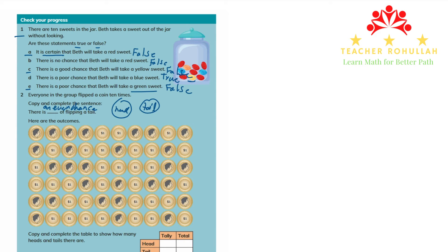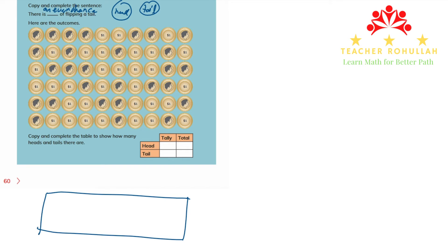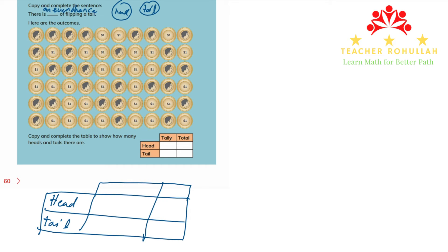As I said, the students flip the coin 10 times each. At the bottom it says copy and complete the table to show how many heads and tails there are. I will draw a bigger table here because the table is very small. We have head and tail columns, with tally and total labels. For the first student, we have seven heads, so I will record seven tally marks.